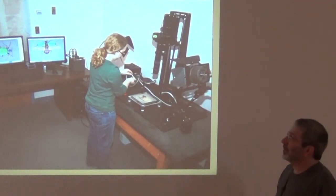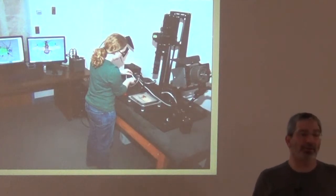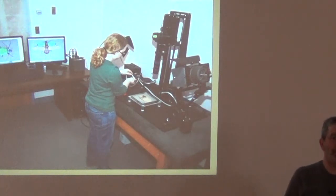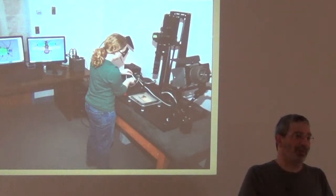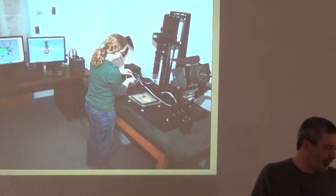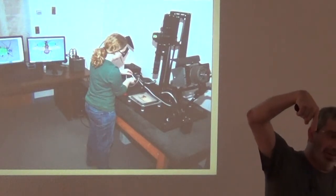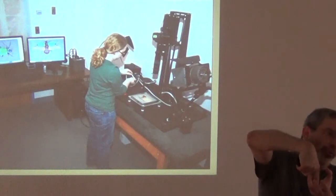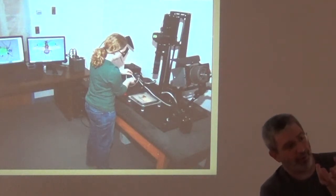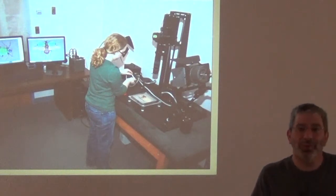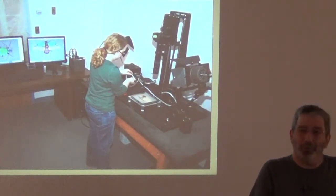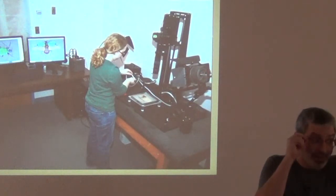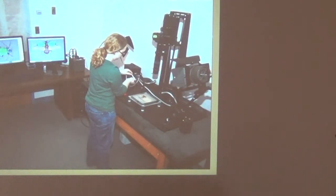A still harder task is dealing with three-dimensional collections. The big nightmare in the biodiversity world is insects, because they're small and collections are huge. Worst of all, an insect specimen is a pin that goes down through the insect and has a stack of tags — sometimes five or ten tags — each with one little bit of information written in microscopic script.